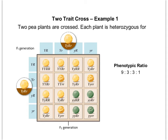You should be able to count up nine offspring that are going to have both dominant traits — both yellow and round. You can tick them off as you go: one, two, three, four, five, six, seven, eight, nine. So that nine represents those with both dominant traits.